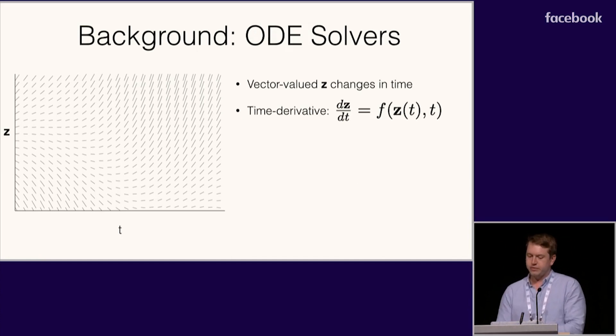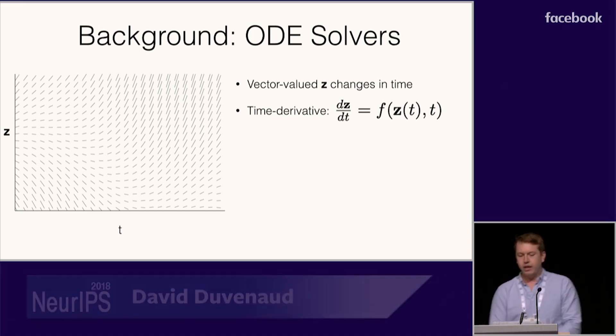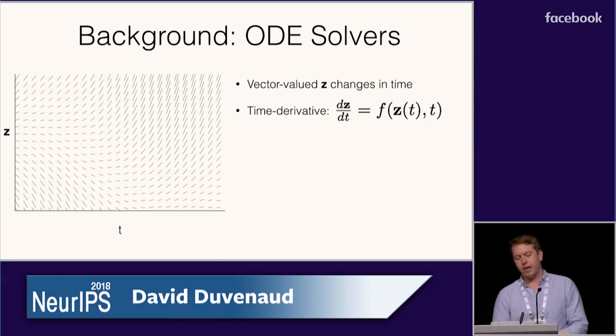The setting is that there's a vector-valued latent state z, such as the position and velocity of a system of particles or a concentration of chemicals in a reaction. This state changes continuously with time, and a function f defines the derivative of this state with respect to time. This gradient field can vary both with the current state and time.